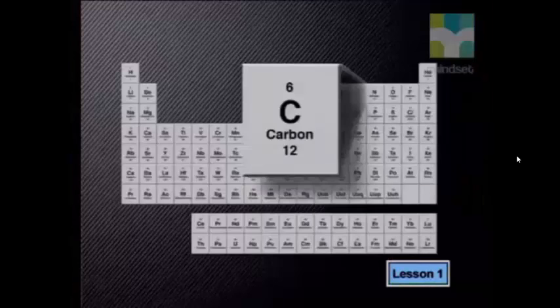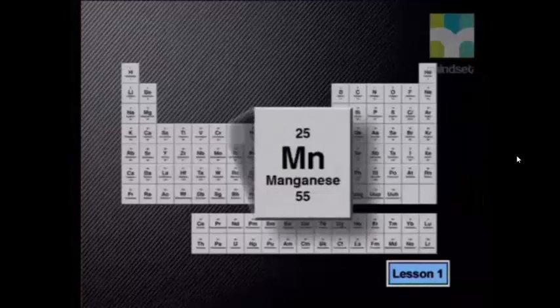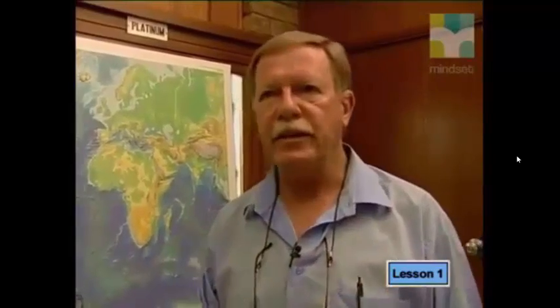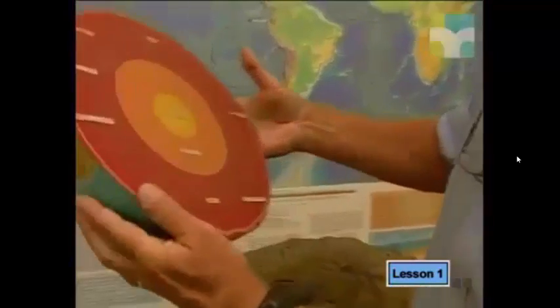Most of the chemical elements of the periodic table occur in combination with other things. Natural chemical compounds belong to a category of compound which we call minerals. So the Earth is really made up of minerals, which are natural chemical compounds. The Earth as a whole is layered, like the layers inside an onion.